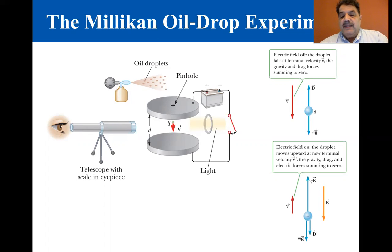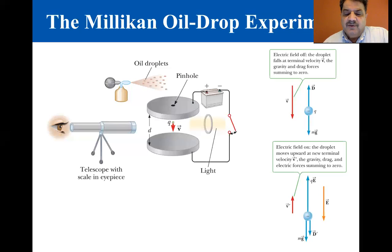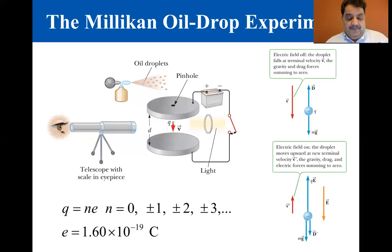After making measurements on thousands of droplets, Millikan and his co-workers found that to within about 1% precision, every drop had a charge equal to some positive or negative integer multiple of the elementary charge e.